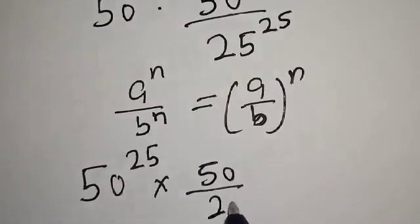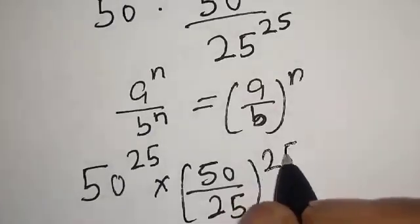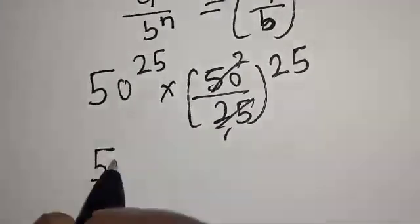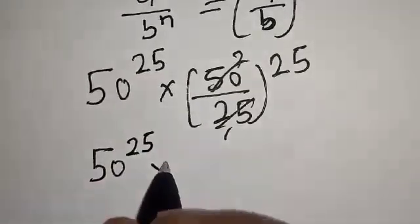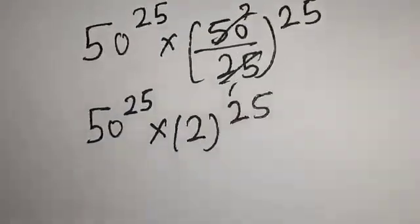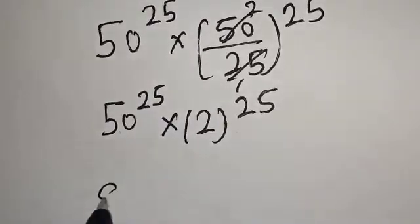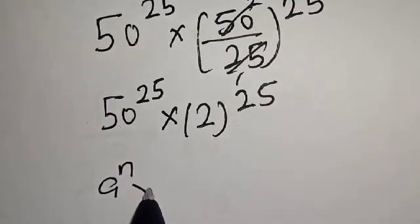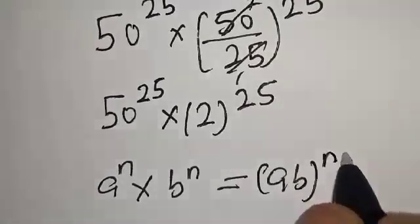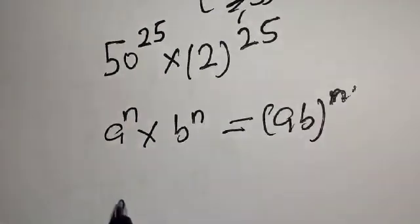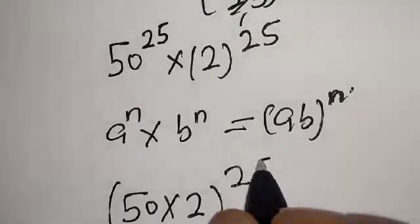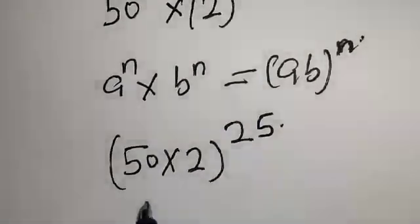Applying that rule, we get 50 over 25 raised to power 25, multiplied by 2 raised to power 25. Since 50 divided by 25 equals 2, we have 2 raised to power 25 multiplied by 2 raised to power 25. Now recall that a raised to power n multiplied by b raised to power n equals a times b raised to power n. So we get 50 multiplied by 2 raised to power 25, and 50 multiplied by 2 is 100 raised to power 25.